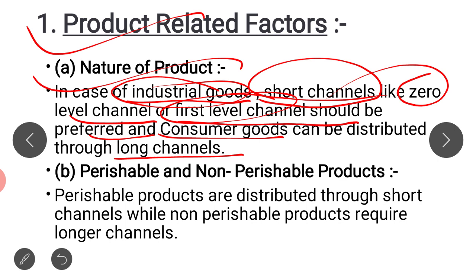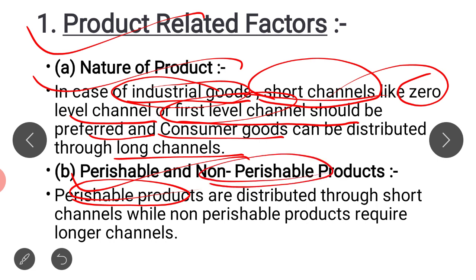Another product-related factor is perishable versus non-perishable. Perishable products are those which spoil very fast, like fruits, vegetables, and dairy products. Because they are perishable, we use a short channel of distribution — we can sell directly or use a first-level channel.